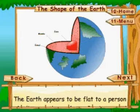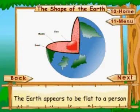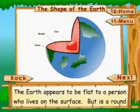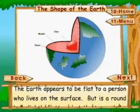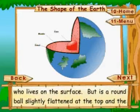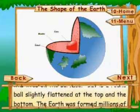The shape of the earth. The earth appears to be flat to a person who lives on the surface, but it is a round ball slightly flattened at the top and the bottom.